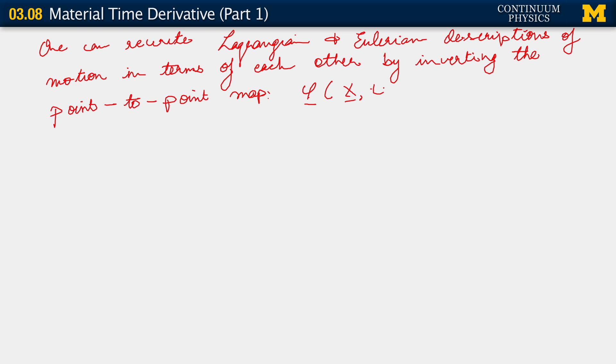Phi of X comma t equals little x — this is one way in which we can go from one to the other. In particular, what we can do is simply say that X can be written as phi inverse of little x at the same time t. However, in general, inverting functions is not pleasant business. In many cases, that inversion may not be easy to get at. So whereas it is convenient as a formal justification for this relation between Lagrangian and Eulerian description, we shouldn't rely upon being able to invert that motion every time.